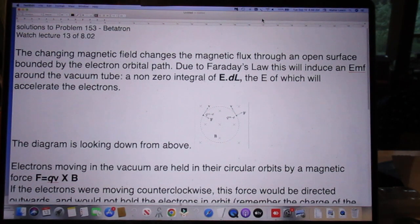The changing magnetic field changes the magnetic flux through an open surface bounded by the electron orbital path. Due to Faraday's law, this will induce an EMF around the vacuum tube, a non-zero integral of E dot DL, the E field of which will accelerate the electrons.